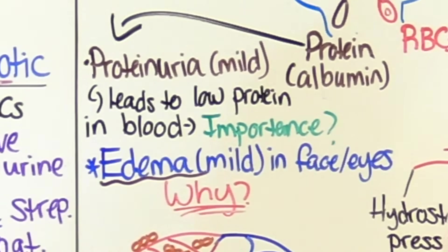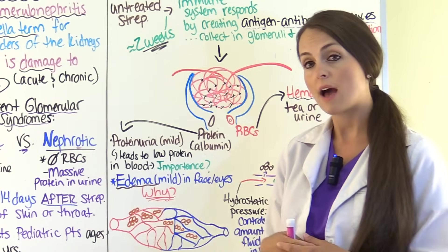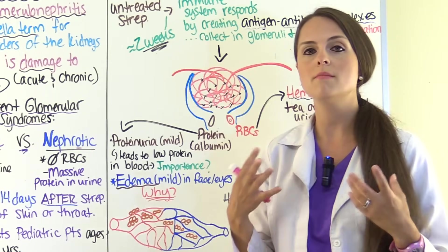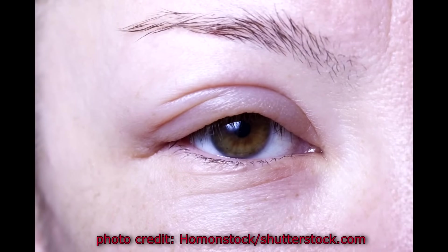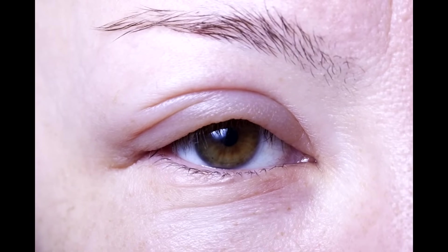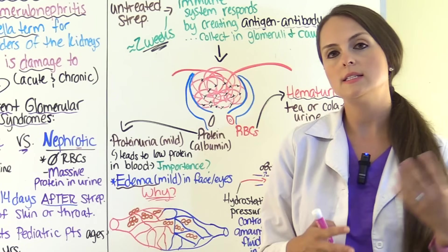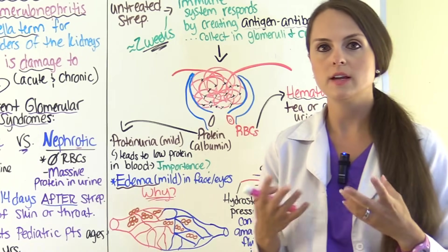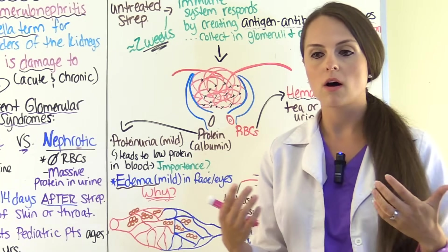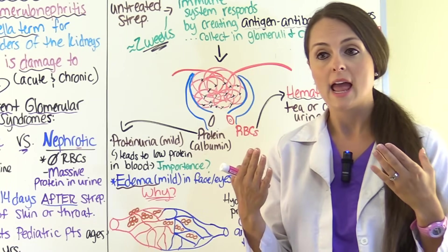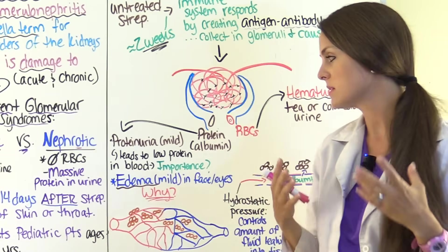Why is low protein in the blood significant? Because of that low protein, the patient will start to have edema. In this condition it will be mild edema, mainly seen in the patient's face or around the eyes, and it tends to be most prominent in the morning — which is common in kidney disorders. The eyelids are very delicate, with thin, folded, pocketed tissue that is a great place for extra fluid to collect, and easy to notice because the tissue is so thin.